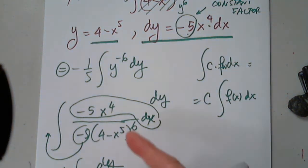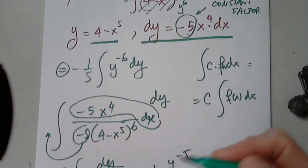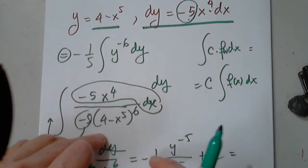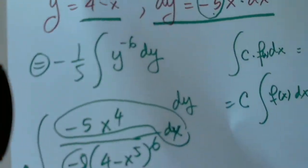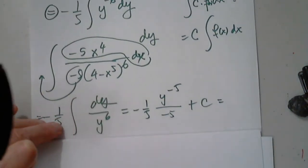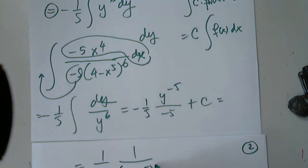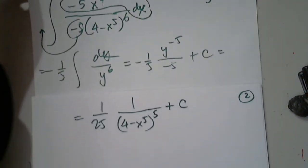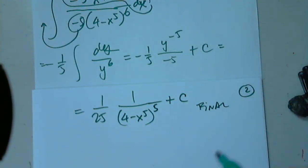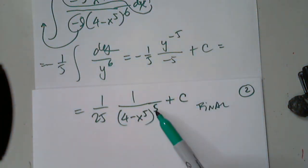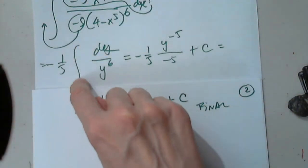So then I have negative one fifth and this is y to negative six, so y to negative five over negative five plus a constant C. To finalize this, I have to write it as positive one over 25 — one over 25, one over y to the fifth. But now I go back to my y: four minus x to the fifth, everything to the fifth, plus a constant C. I went back to the original variable. I multiplied these two as one over 25. I brought this to the denominator because it has power negative five — four minus x to the fifth to the fifth — plus a constant C because it's an indefinite integral.